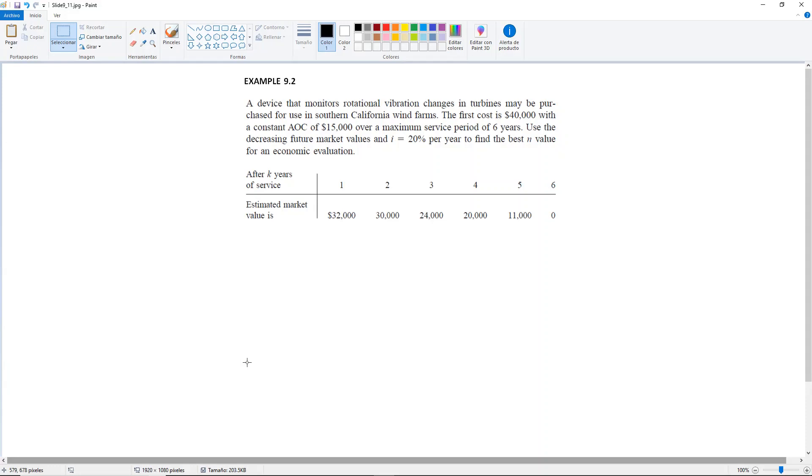The first cost is $40,000 with a constant annual operating cost of $15,000 over a maximum service period of six years. Use the decreasing future market values and i equals 20% per year to find the best n value for an economic evaluation.